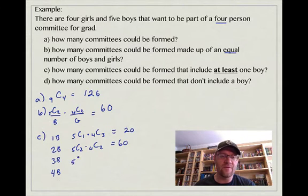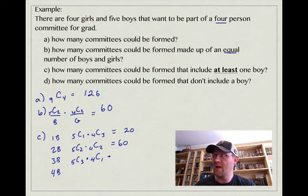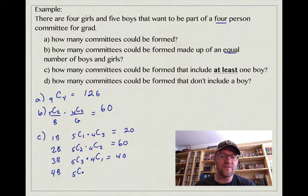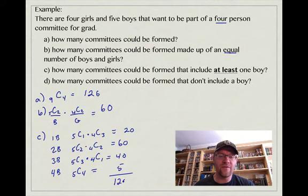Three boys, so it would be 5C3 and 4C1. That gives us an answer of 40. And then all four boys would be 5C4, which gives us an answer of 5. So when we add all these together, because it is what we call cases, we have 60 and 40 is 125. So 125 of those committees would include at least one boy.